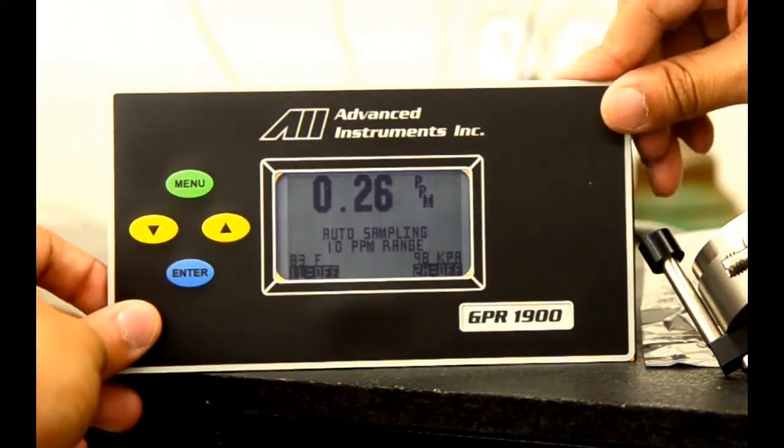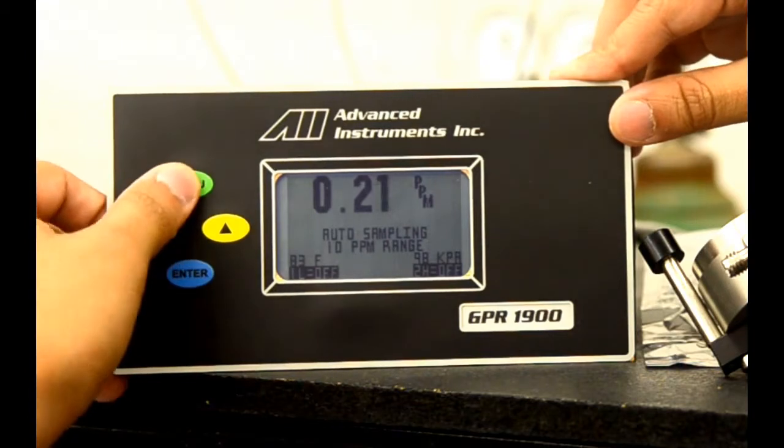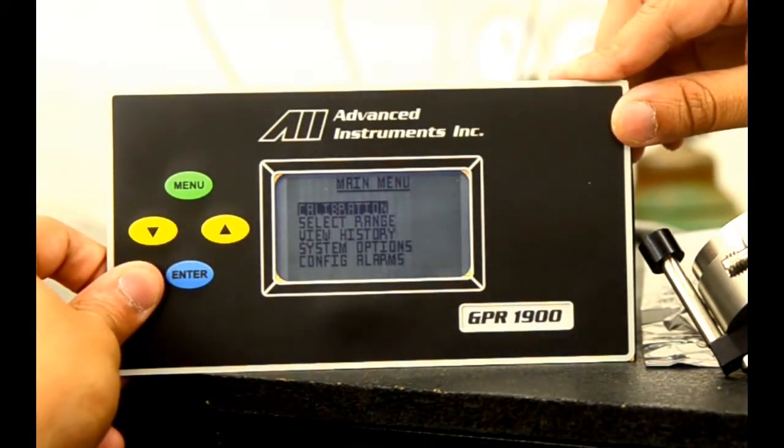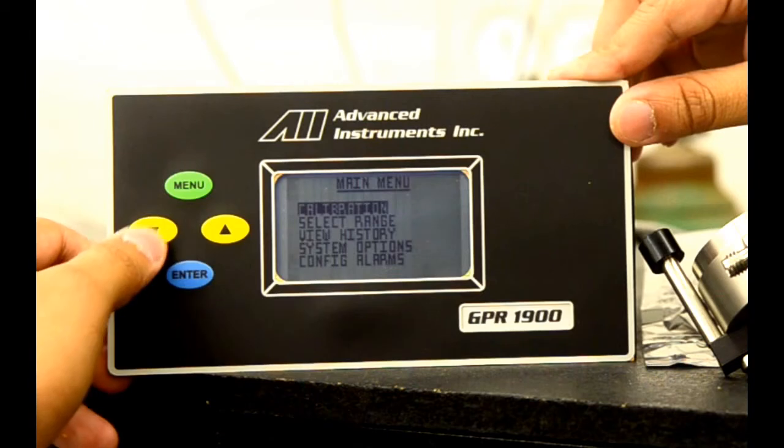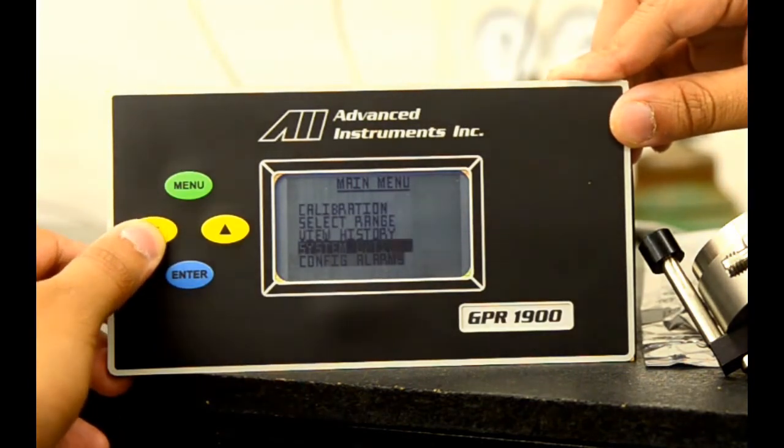The main screen also shows the alarm values as well. From here, you can hit the menu button and be taken to the main menu. There you'll have the options of calibration, select range, view history, system options, and configure alarms.